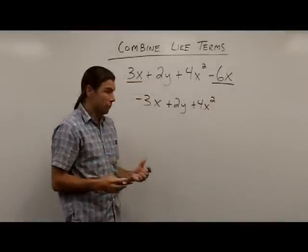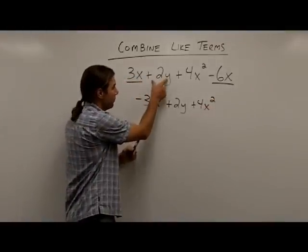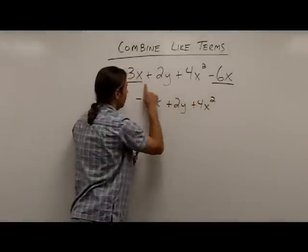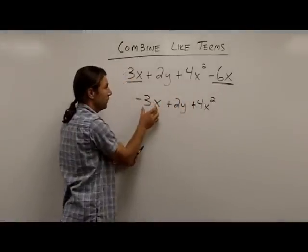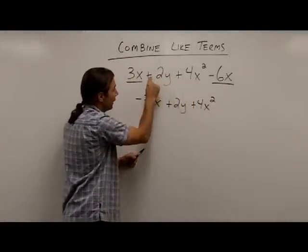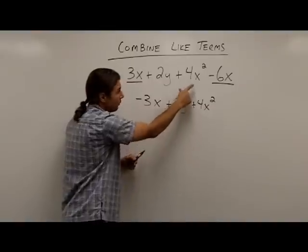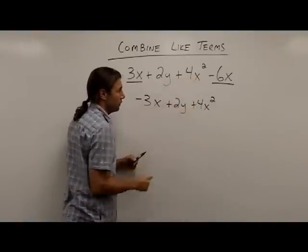Notice, when I move these terms, I also bring the sign with them. When I got that negative answer to these combined terms, I wrote the negative 3x. When I bring down the 2y, I also bring the plus sign with it. When I bring down the 4x squared, I also bring the plus sign with it.